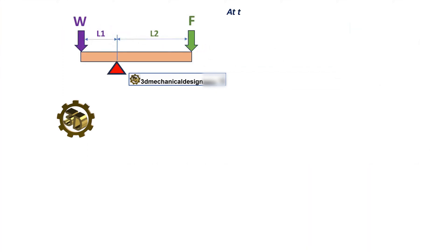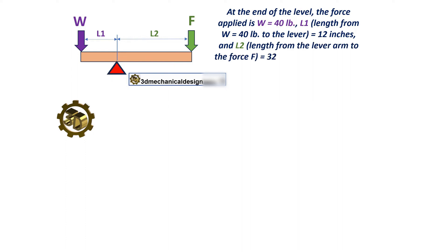At the end of the level, the force applied is W equals 40 pounds. L1, length from W equals 40 pounds to the lever, equals 12 inches. And L2, length from the lever arm to the force F, equals 32 inches. Determine the value of F required to balance the lever.